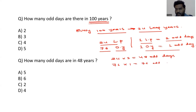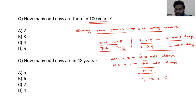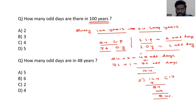Now divide 124 by 7 to find the remainder: 7 times 17 is 119, and the remainder is 5. So there are 5 odd days in 100 years. Option D is the correct answer.